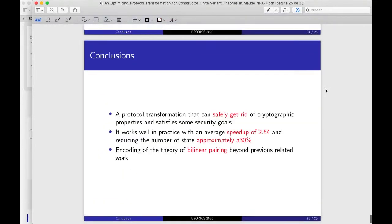For the conclusions, in this talk, we have seen a protocol transformation technique, getting us an optimized protocol and allowing us to safely get rid of cryptographic properties that satisfy some security goals, reduce sometimes drastically the state space, and we have shown interesting protocols where the transformation can be successfully applied. This transformation performs very well in practice, obtaining a speedup of 2.54 and reducing the state space with an average of 30%. Furthermore, for the first time, we encode the theory of bilinear pairing in the Maude-NPA tool, which goes beyond existing definitions in the literature.